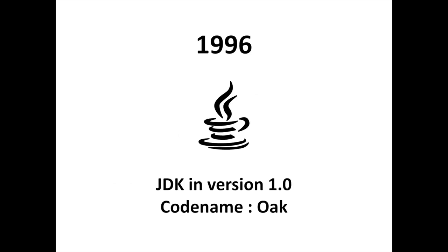The JDK was announced in beta version. In 1996, the JDK was introduced in version 1.0 with codename Oak for Solaris, Windows, Mac OS Classic, and Linux. This included the Java runtime, virtual machine and class libraries, and the development tools — for example, the Java compiler.